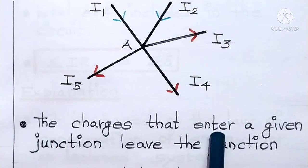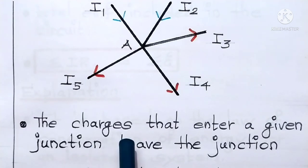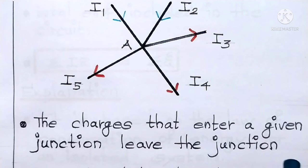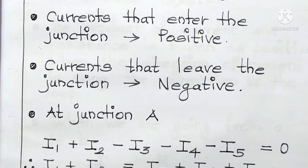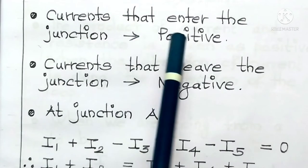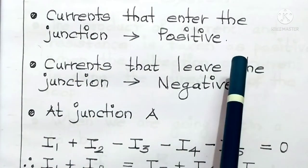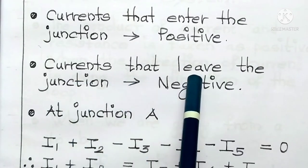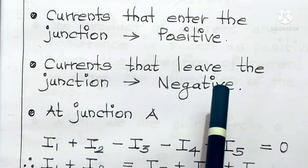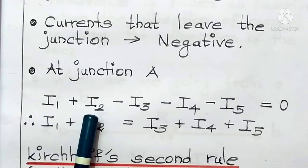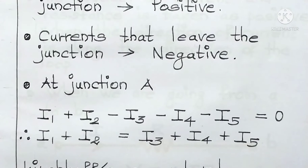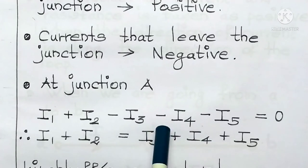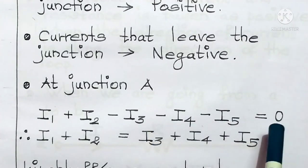The charges that enter a given junction leave the junction. It means the amount of charges that enter a given junction — all of them — they leave the junction. At junction A: I1 plus I2 minus I3 minus I4 minus I5 is equal to 0.